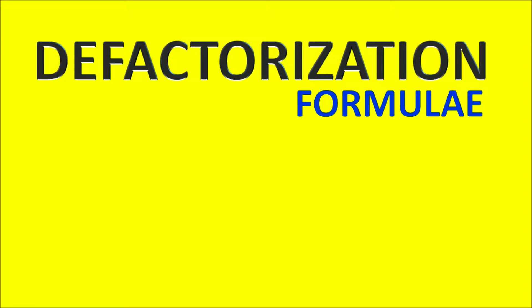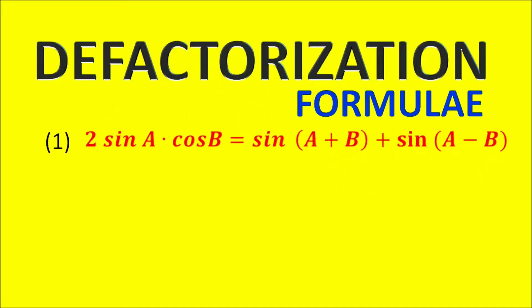Defactorization Formula. First Formula: 2 sin A cos B is equal to sin(A plus B) plus sin(A minus B).